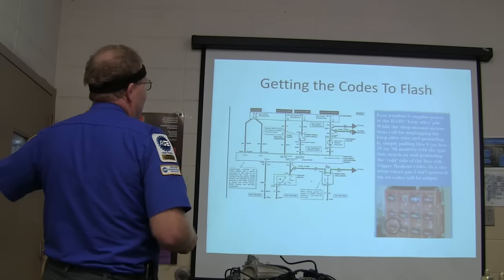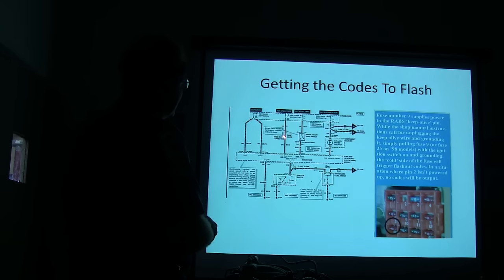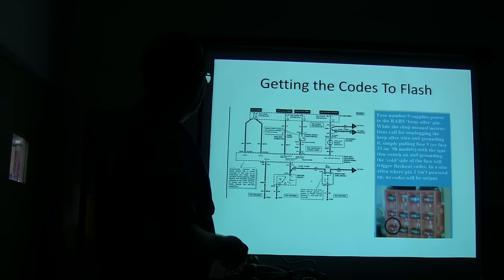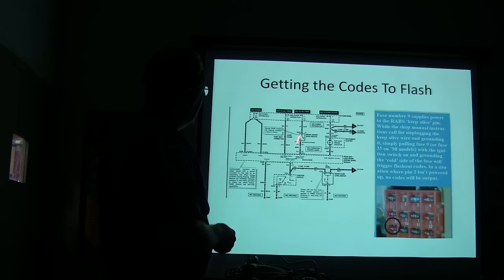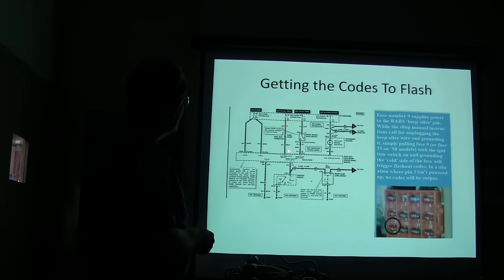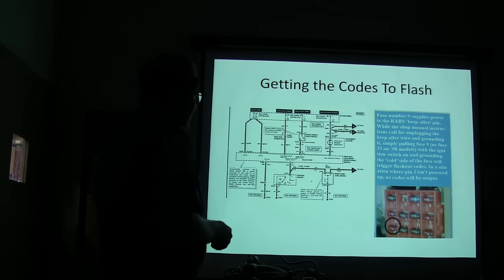All right, so fuse number nine, on this particular one, supplies the power to the RAB's keep-alive. Now this is the same as the diagnostic connector right here. It's got a black-orange wire, it's got a red wire, and this is what's cool about that. On some of them, it actually shares that with the one that feeds the brake pedal. And so what you can do, on some of them you could actually pull the fuse that feeds it, and then tap the brake, and it would start flashing the code.